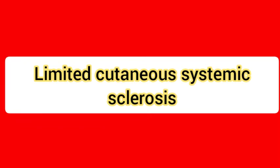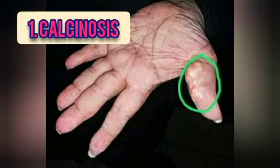It has five components. Number 1: C for calcinosis — that is calcium deposits in the skin.